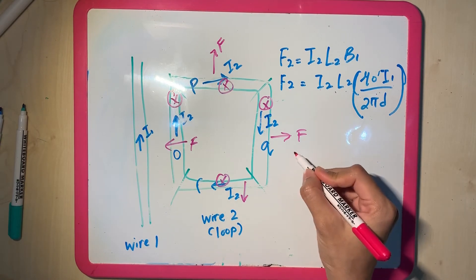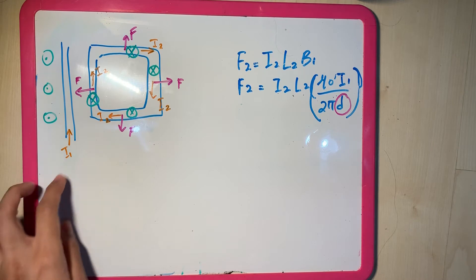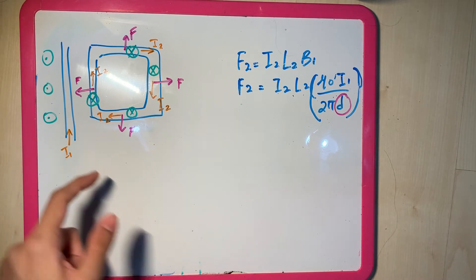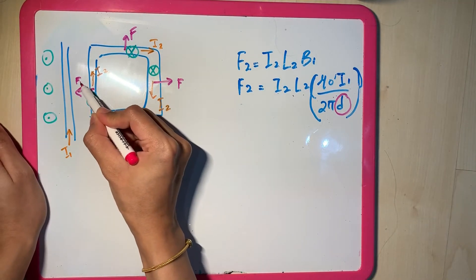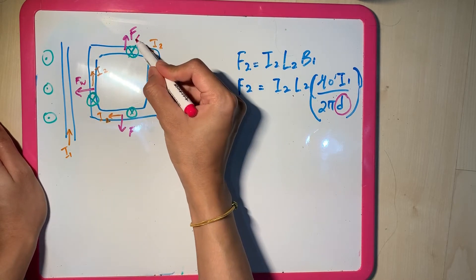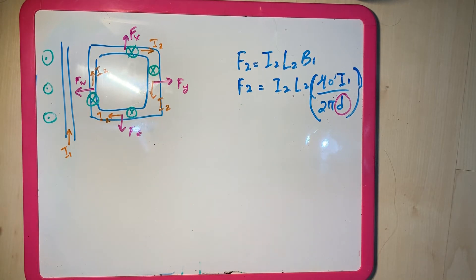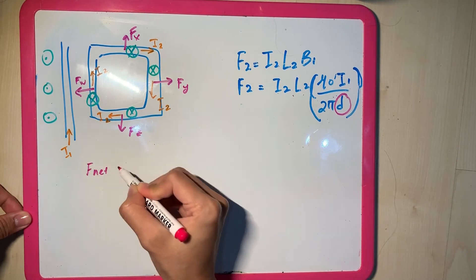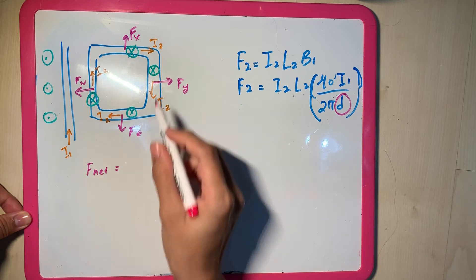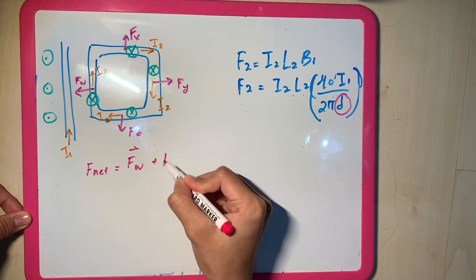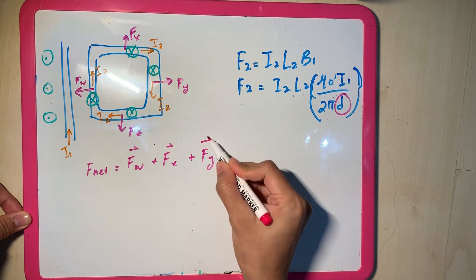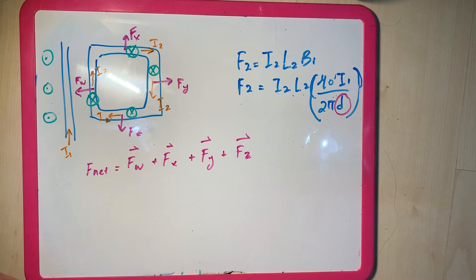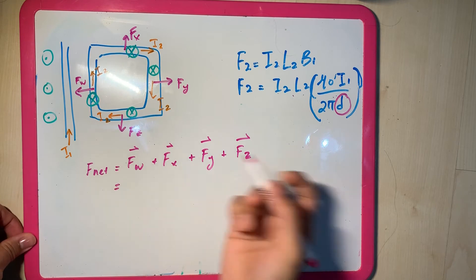I've redrawn the diagram. We have discovered the direction of our forces based on our right-hand rules. Let's label the forces as FW, FX, FY, FZ. Because we want to find the F net, the F net will be the summation of these forces, and they have direction, so you need to resolve that.